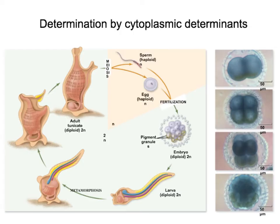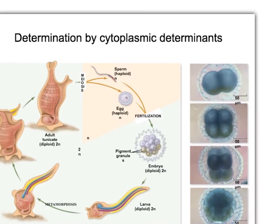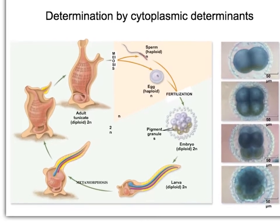Let's look at cell determination by cytoplasmic determinants. These are particles that are placed in the egg since the moment that the egg forms. And these particles, like you see here, in this case are pigmented.